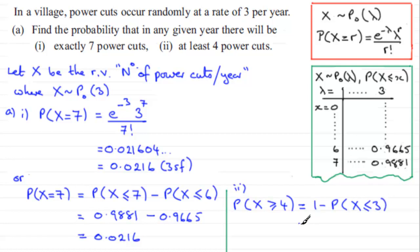And we can use our cumulative probability tables here. Because if you look under the probability X is less than or equal to 3, you should see 0.6472. So it's going to be 1 minus 0.6472. And if you do that subtraction, you'll end up with 0.3528.